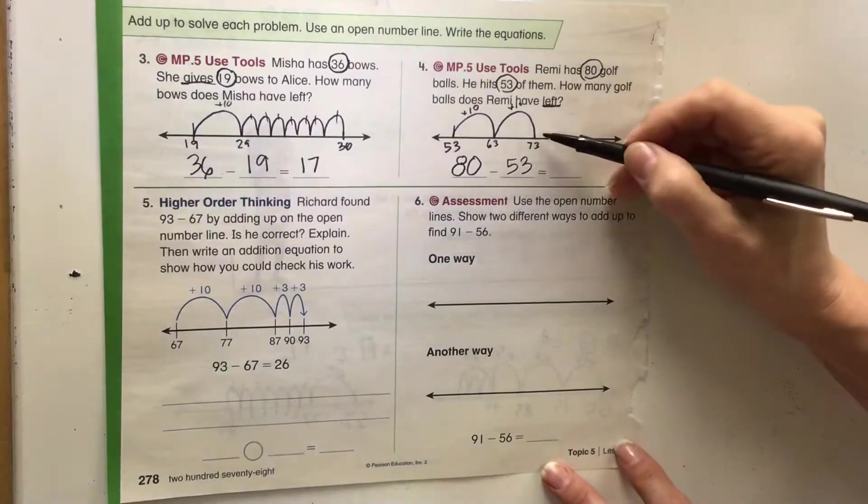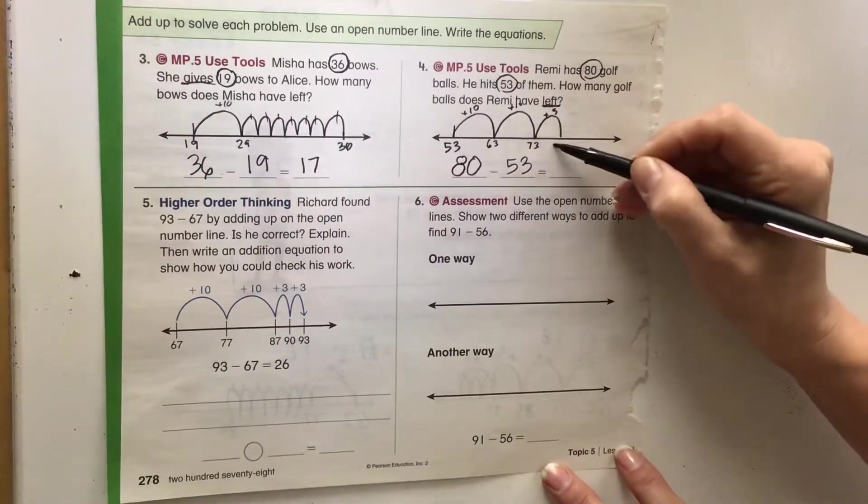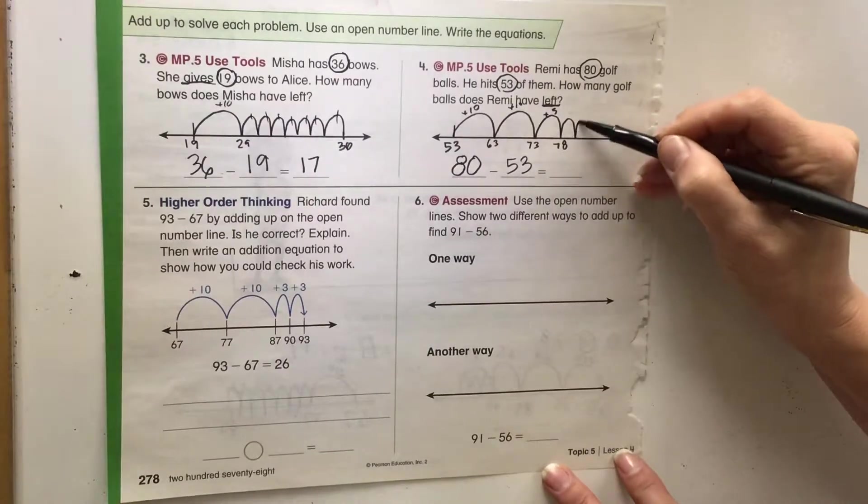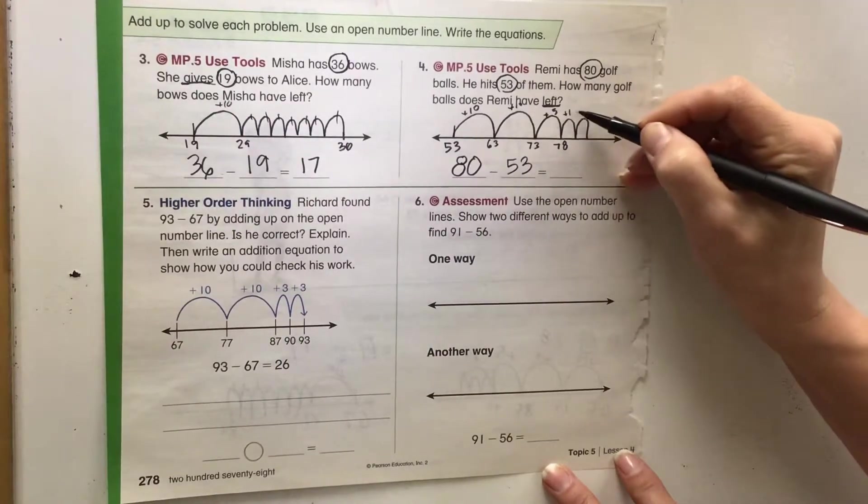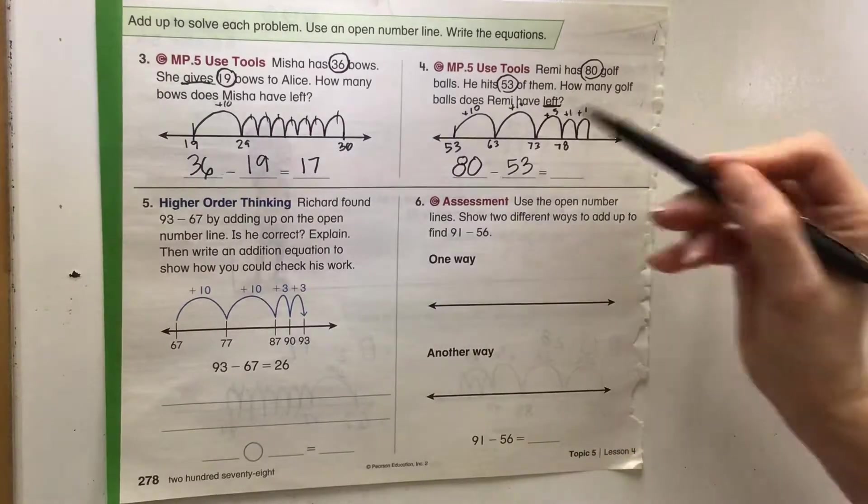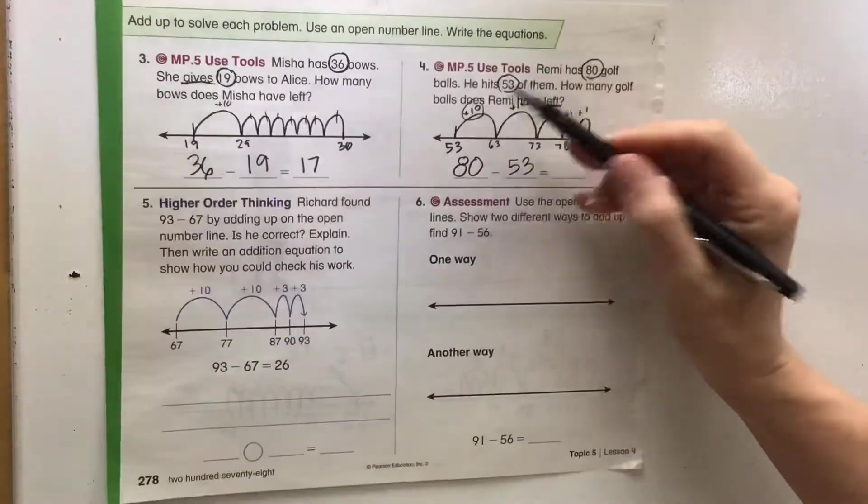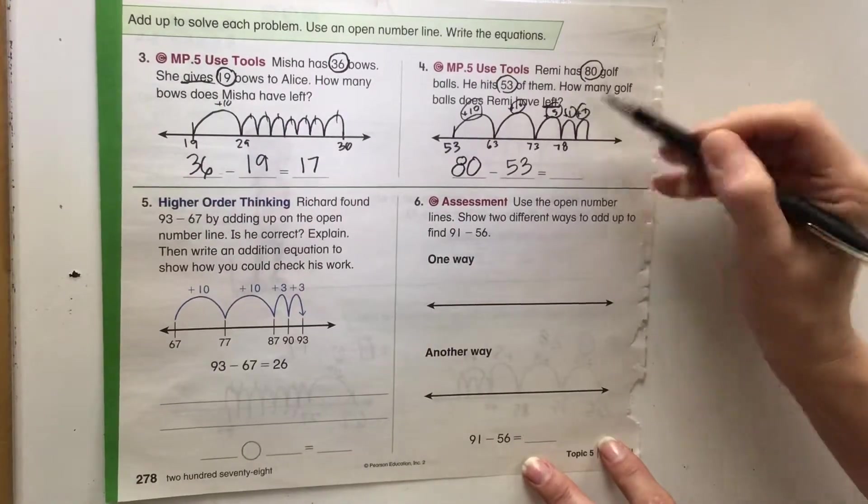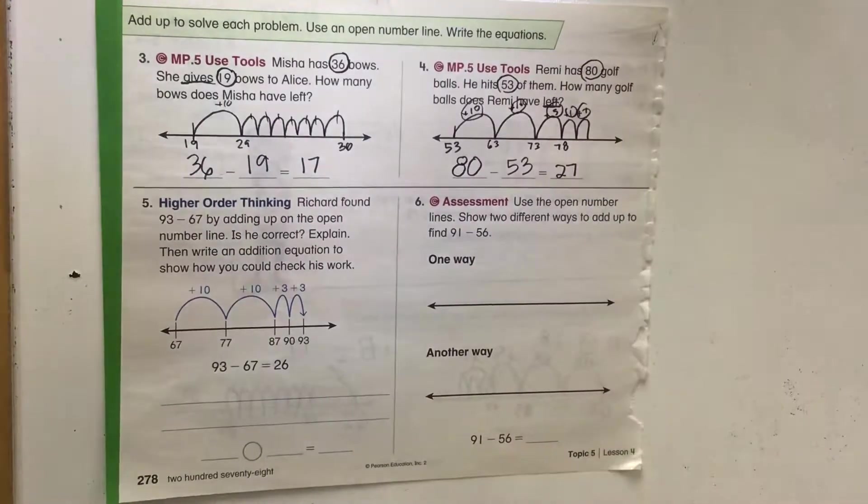Let's do a hop of 5. 73 plus 5 will put us at 78, 79, 80. So we'll add two little hops here. So what we have here is 10, 20, 25, 26, 27 for counting up.